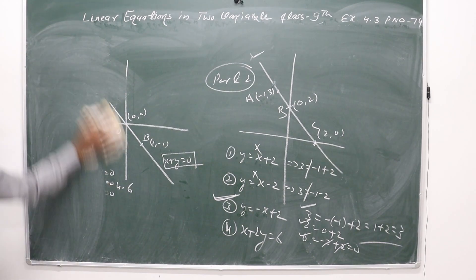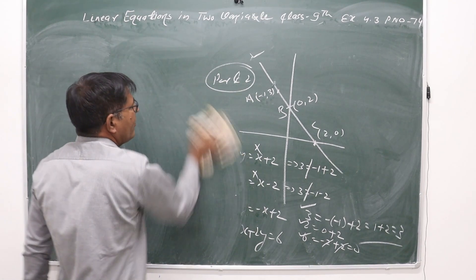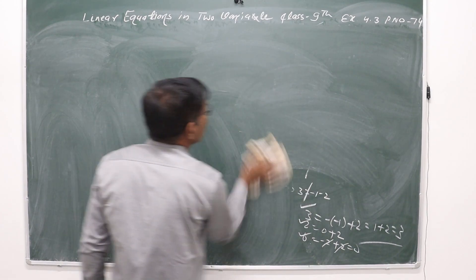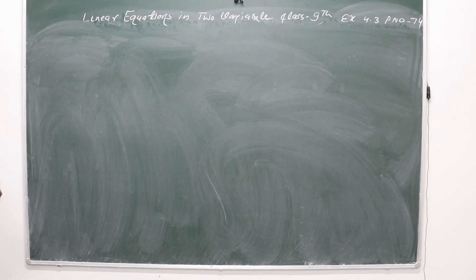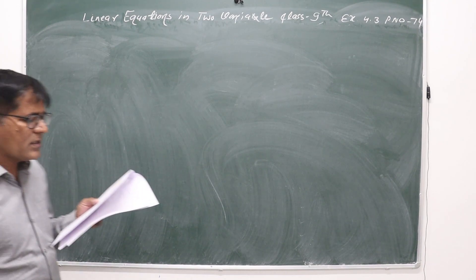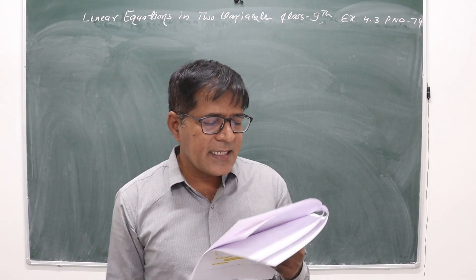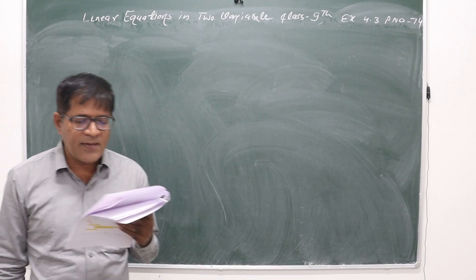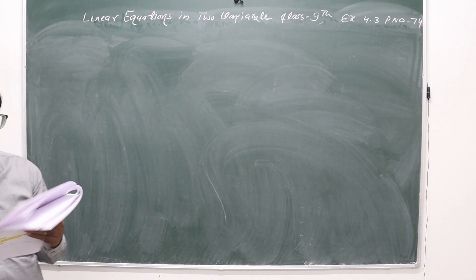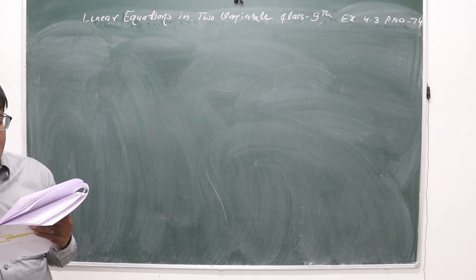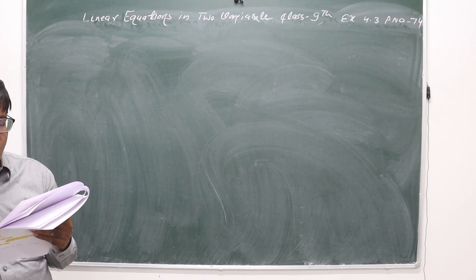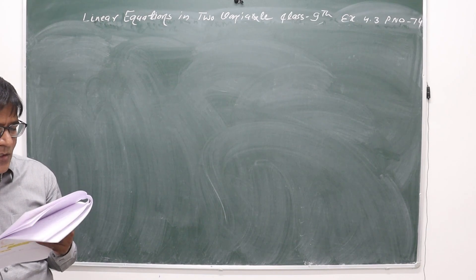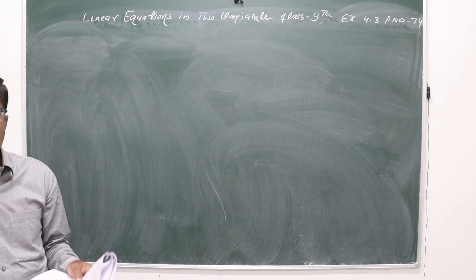Now question number 6. Read the question carefully first. The question is: if the work done by a body on application of a constant force is directly proportional to the distance covered by the body, express this in the form of an equation in two variables and draw the graph, taking the constant force as 5 units. Also read from the graph the work done when the distance travelled by the body is first 2 units and second 0 units.